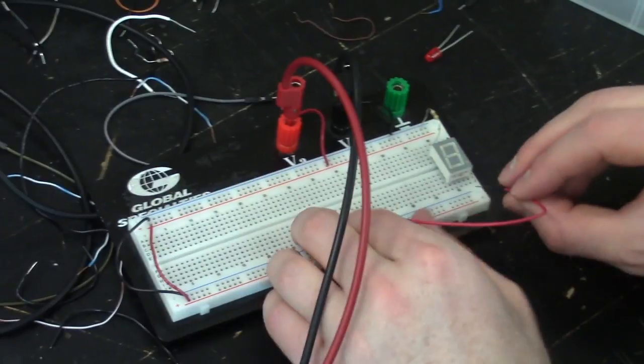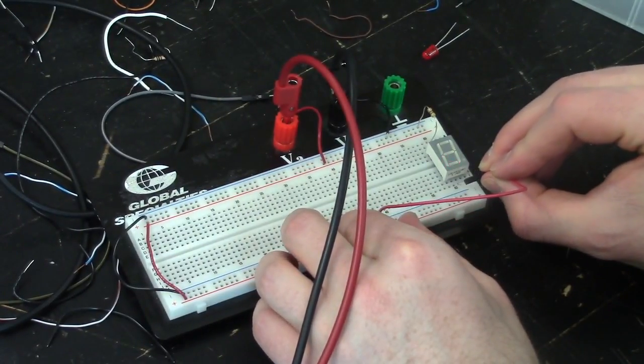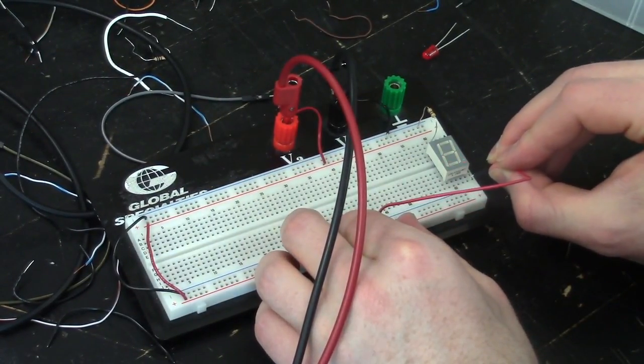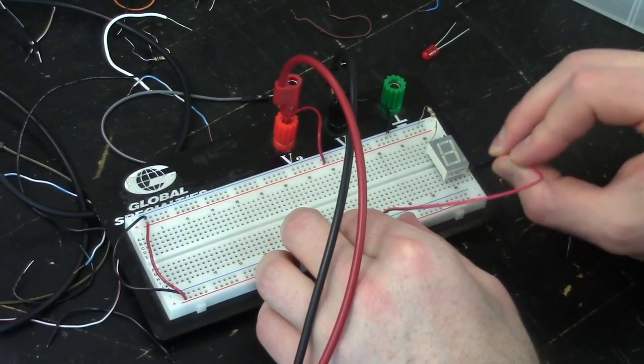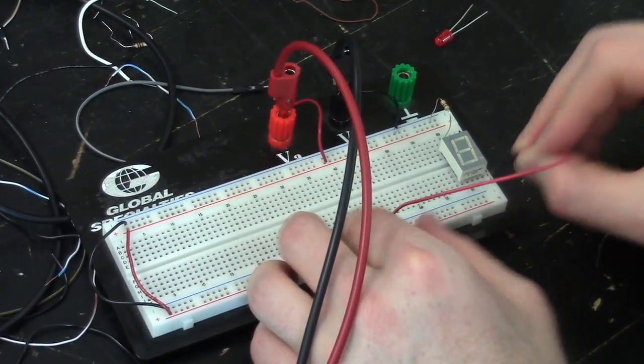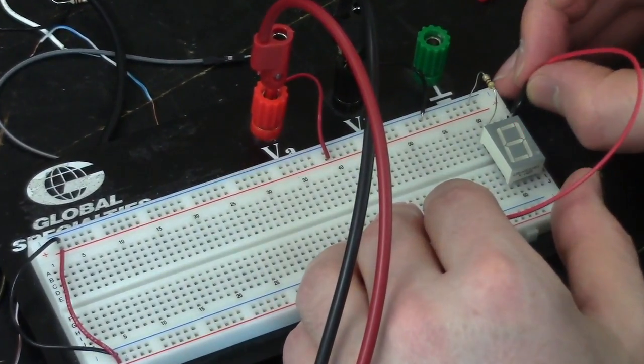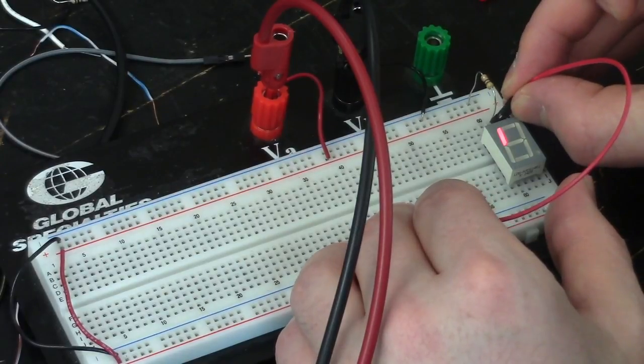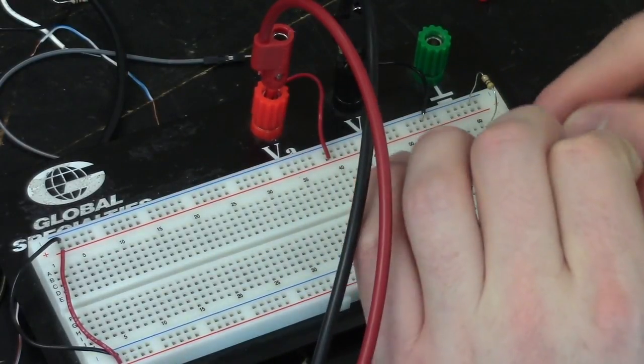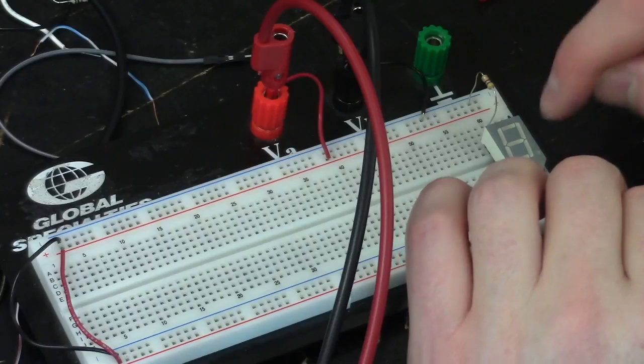So this is a seven segment display. It's called that because it has seven different LEDs on there, seven different segments to it that make up the main display. It doesn't count this little dot here that you would use for a decimal number. And it's really just seven different LEDs that are connected all through this same ground pin, which is the center pin.